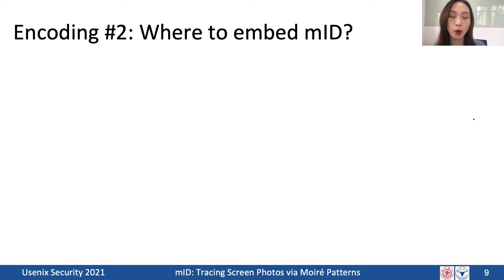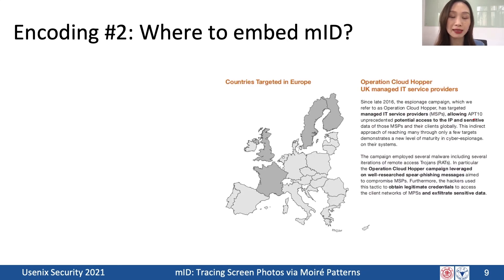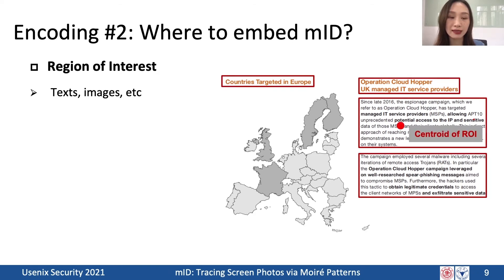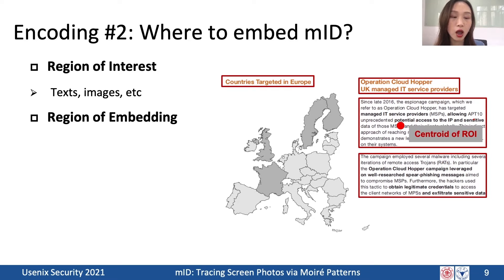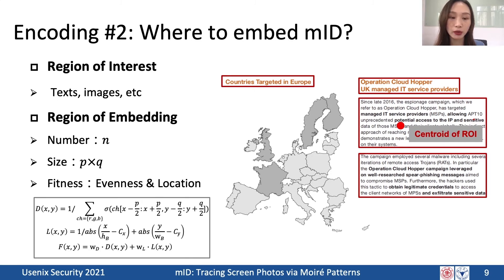The second question is where to embed MID. To find the appropriate region, we first locate the regions of interest on the current page using computer vision techniques — usually containing text or images. To maximize the chance that MID is captured in screen photos, we embed the generated gridding near the center of these regions of interest. We search for n regions of embedding, where n is the number of bits in MID. Each region has a size of p×q, and we use a sliding window of the same size to scan the page, calculating fitness based on both evenness and distance to center, then select the top-n windows as embedding regions.